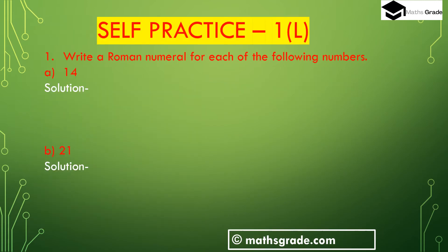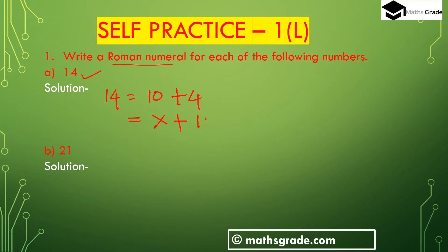Question number 1: Write Roman numerals for each of the following numbers. Part (a) is 14. We can write 14 as 10 plus 4. In Roman numerals, 10 is X and 4 is IV, so 14 is written as XIV.